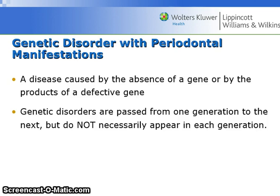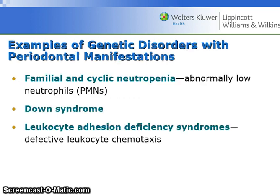Genetic disorders with periodontal manifestations are caused by the absence of a gene or by the products of a defective gene. Genetic disorders are passed from one generation to the next, but do not necessarily appear in each generation — that is the difference between a genotype and a phenotype in genetics. Examples include familial and cyclic neutropenia, which is an abnormally low neutrophil count; Down syndrome; and leukocyte adhesion deficiency syndromes, which exhibit defective leukocyte chemotaxis.